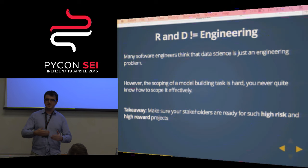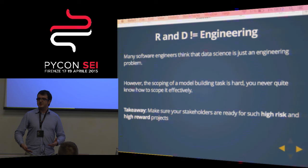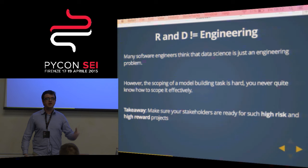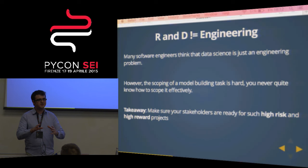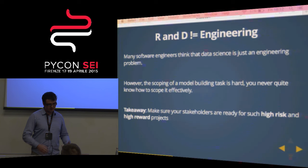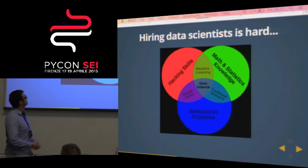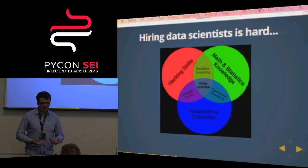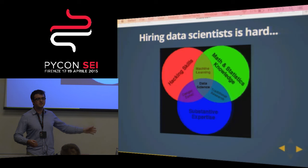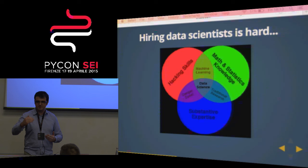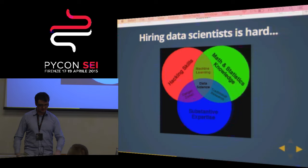How do you communicate that to your stakeholders? A web application has certain elements that are solved web development problems. But a machine learning model — I don't think we're there yet, depending on which area of data science you're working in. The takeaway is to make sure your stakeholders are ready for such high-risk, high-reward projects. Hiring data scientists is hard, as anyone who has sat on a hiring committee knows. This is Drew Conway's famous Venn diagram — it's a succinct summary of how you bridge the substantial expertise into your problem development. That's one of the things to keep in mind when mentoring young data scientists.